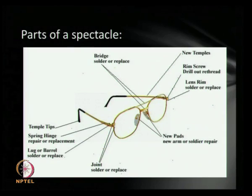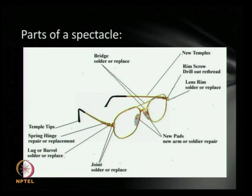First of all, we need to understand the working of a human eye to understand the working of spectacles. The human eyeball consists of a lens made up of living cells, which focuses the light reflected from various objects onto a screen called the retina. Most commonly there are two defects in which the focusing can occur.